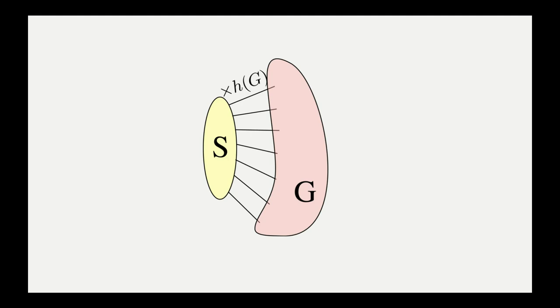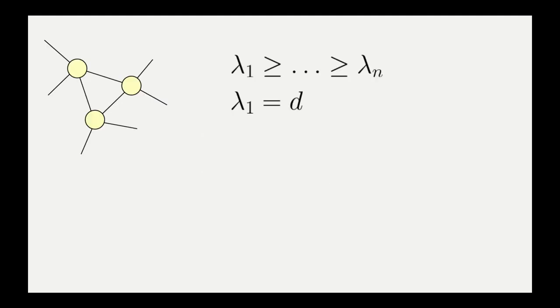A good way to quantify this notion of expansion is through eigenvalues of the adjacency matrix. Recall we were working with undirected graphs, which means the adjacency matrix is symmetric and its eigenvalues are all real. So we can order these and denote them by λ₁ through λₙ.